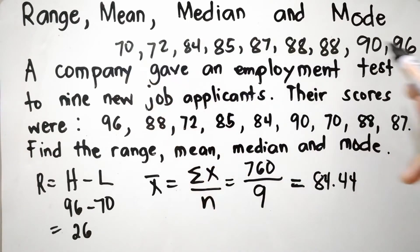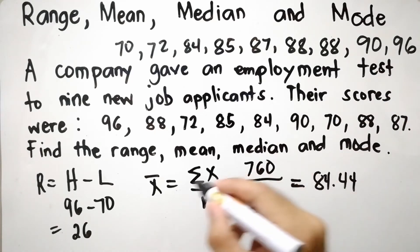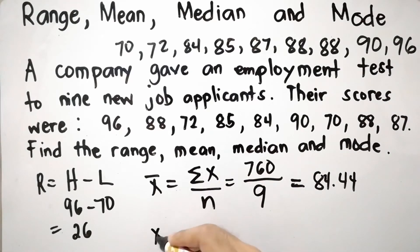So now, since N is equal to 9, we can easily get the middle value, and that is 87. So median denoted as X-tilde is 87.